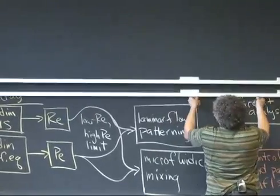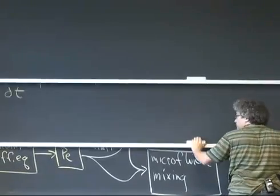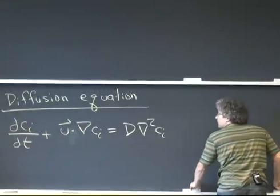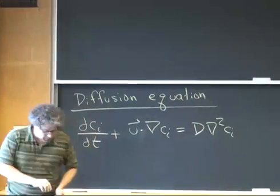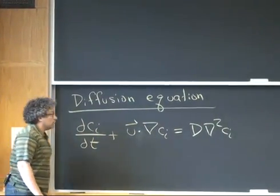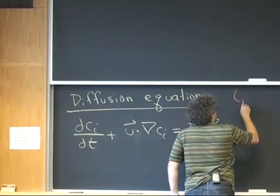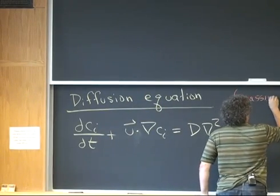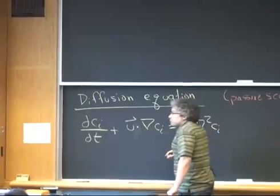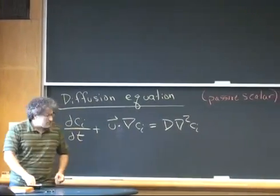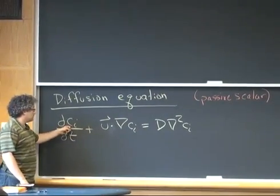Okay, so let's start with the diffusion equation. And I'm writing this diffusion equation for the diffusion of a passive scalar. And this passive scalar in this case is the concentration of some species i.